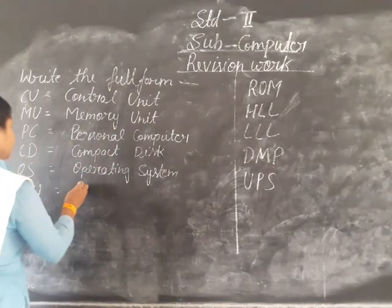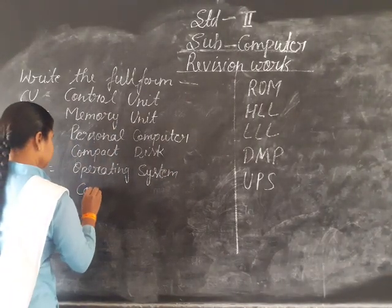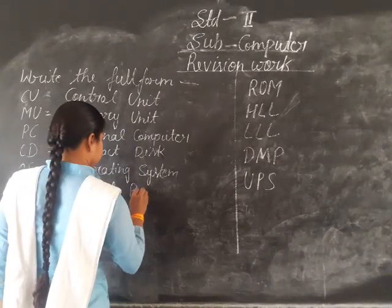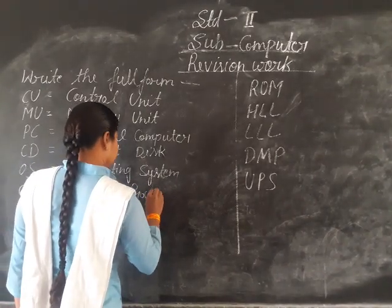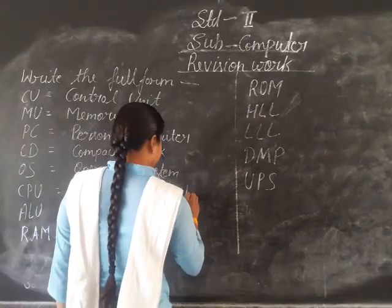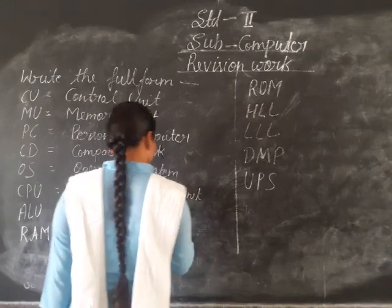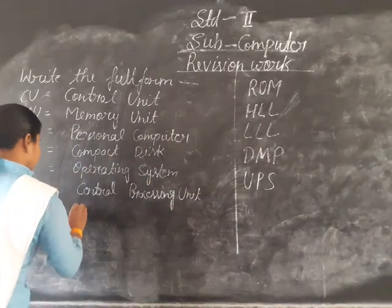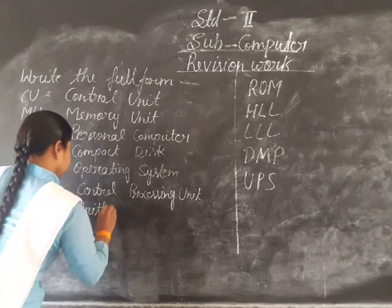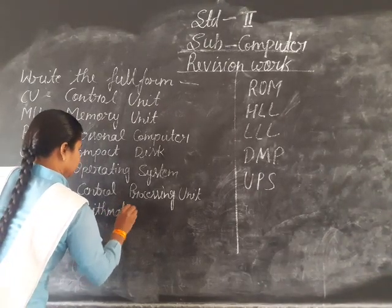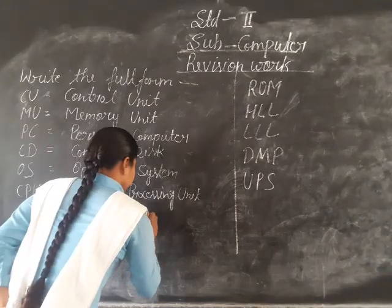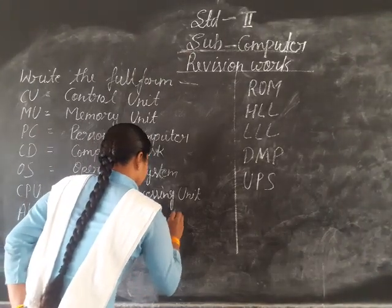And CPU stands for Central Processing Unit — C-E-N-T-R-A-L Central Processing P-R-O-C-E-S-S-I-N-G Processing Unit. And ARU stands for Arithmetic Logic Unit — A-R-I-T-H-M-E-T-I-C Arithmetic Logic Unit.